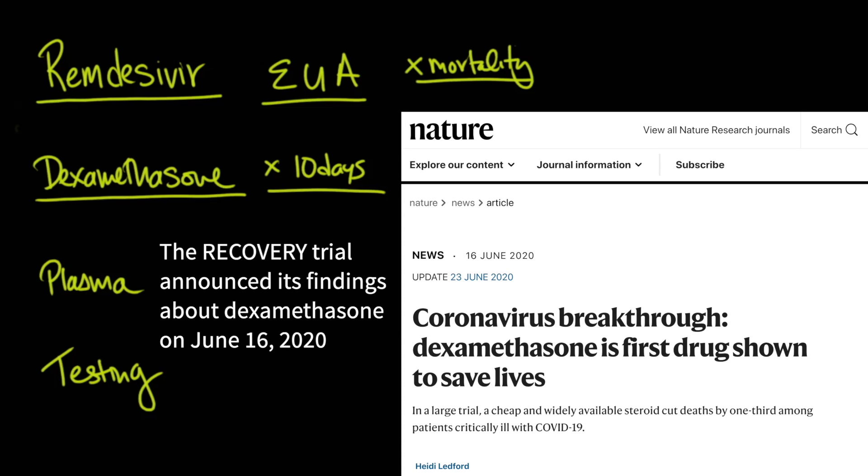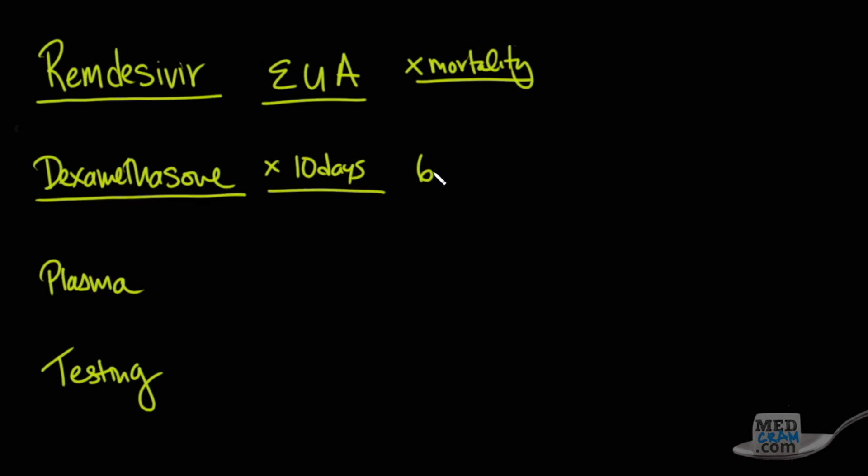The second was dexamethasone, used for about 10 days in the recovery trial in Great Britain. In this case, there actually was a survival benefit. It was 6 milligrams either orally or intravenously. I've been at the bedside taking care of these patients regularly, and many get better very quickly and go home after four or five days or a week.